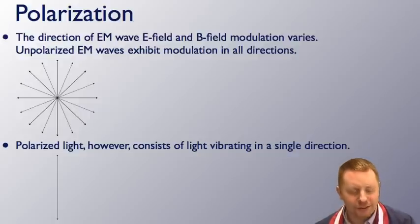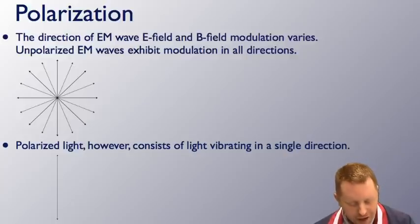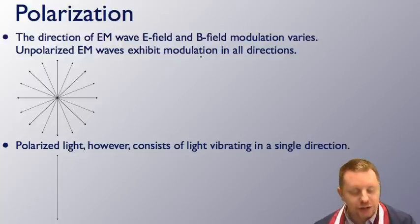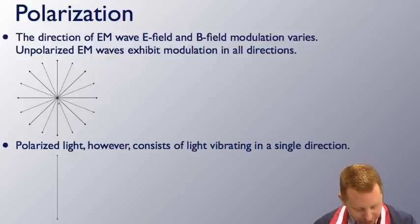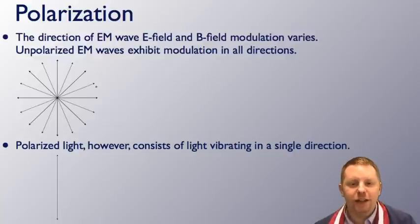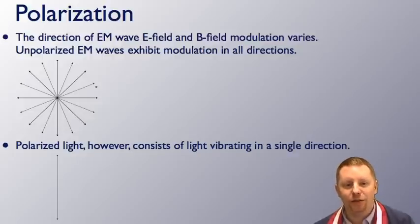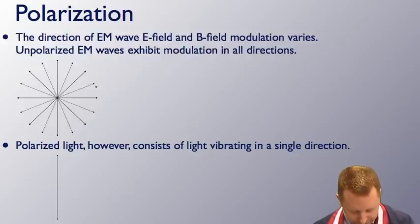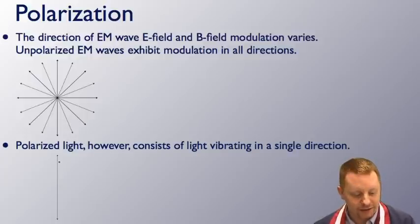Let's see how we can use this. But first, let's talk about polarization. The direction of an electromagnetic wave, the electric field, and the magnetic field modulation varies. Unpolarized electromagnetic waves, unpolarized types of light, exhibit modulation in all directions, where the electric field could be modulating up and down at different angles horizontally. Polarized light just means that we've cut out some of those directions so that most of the modulation is in a single direction. It can be a little more complicated than that, but for a first pass effort, let's pretend that we have just light where the electric field is modulating in a single direction. That would be polarized light.